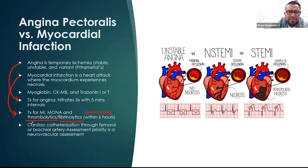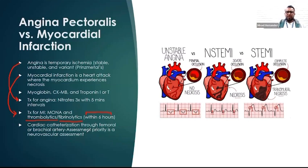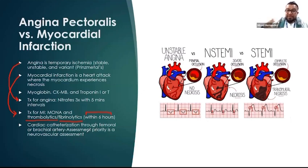We can also do cardiac catheterization through the femoral or brachial artery, depending on where we have better access. We must perform a neurovascular assessment of the extremity — checking circulation, motion, and sensation — both before and after the procedure to ensure the catheter did not disrupt blood flow to that extremity.